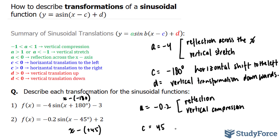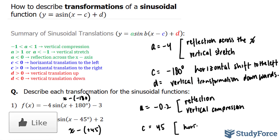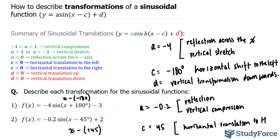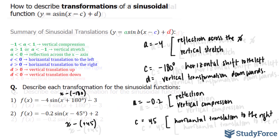This means that we will be shifting the whole wave to the right by 45 degrees, and that is defined right here: when c is greater than 0, you end up with a horizontal translation to the right.